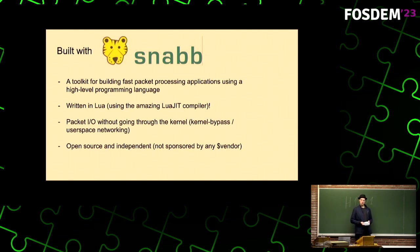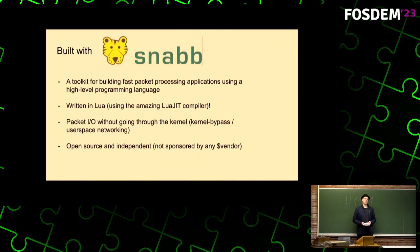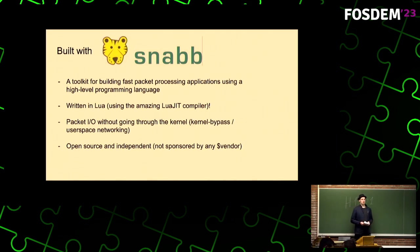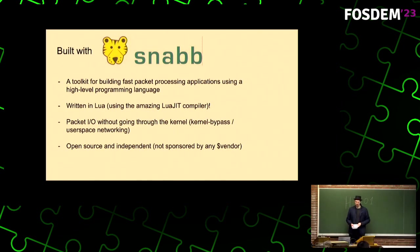SNAP does packet IO without going through the kernel. Generally, the Linux kernel's packet networking stack is slow from an ISP perspective. So SNAP bypasses that and uses its own device drivers — this is also often called kernel bypass networking. SNAP is open source and independent; we're not sponsored by any particular vendor.